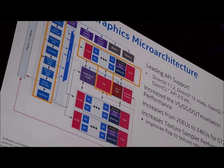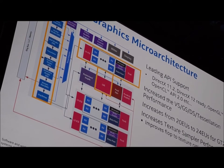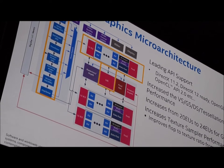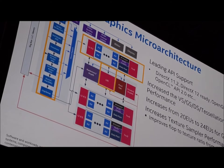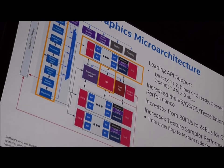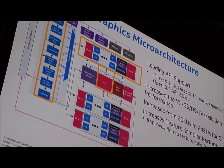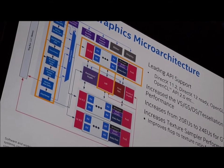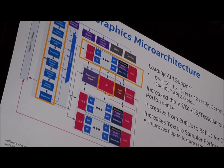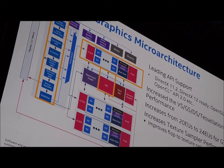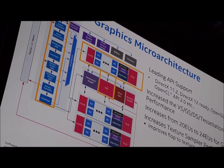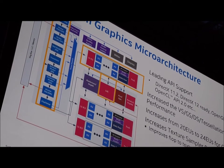With a 20% FLOPS increase and a 50% sampler throughput increase, the FLOP-to-texel ratio changes from 40:1 in the prior generation to 32:1 in this generation — returning to the same ratio as Ivy Bridge two generations prior.